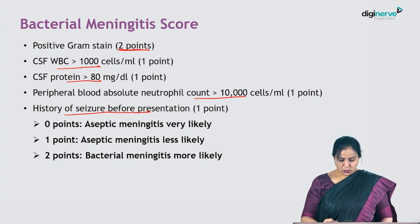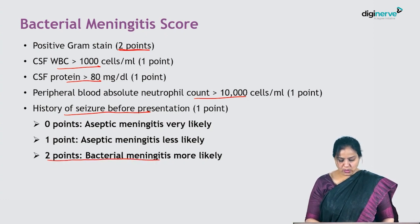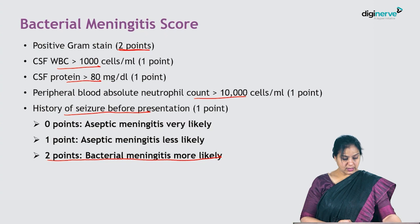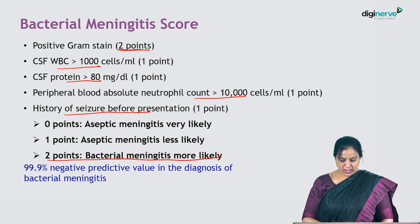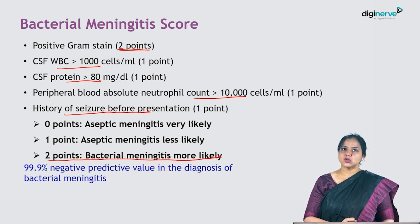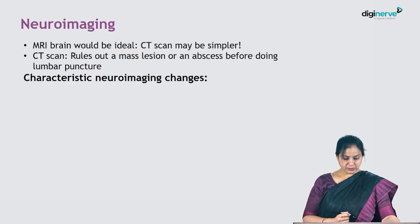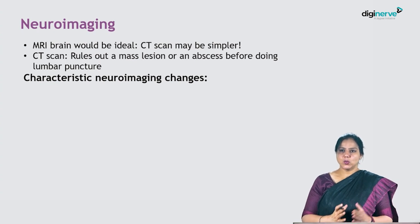The total score is calculated: a score of two points or more means bacterial meningitis is highly likely. Importantly, it has a 99.9% negative predictive value, so if your score is less than two, you can easily exclude bacterial meningitis.